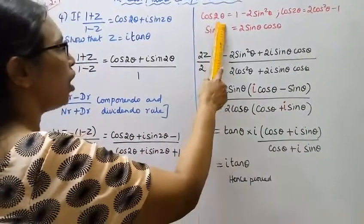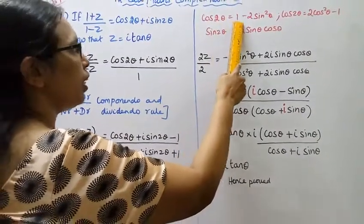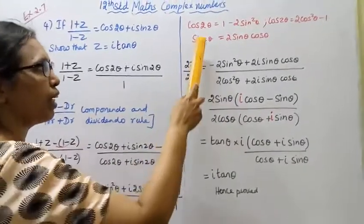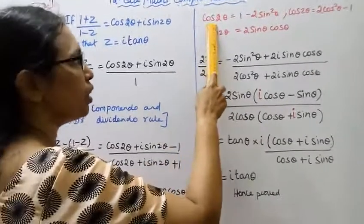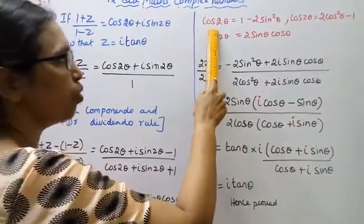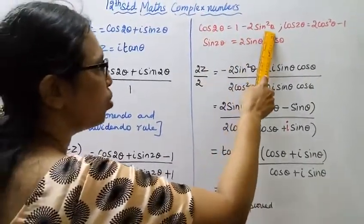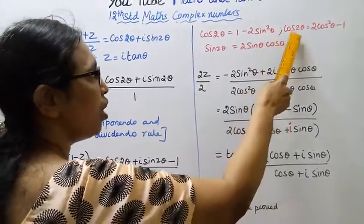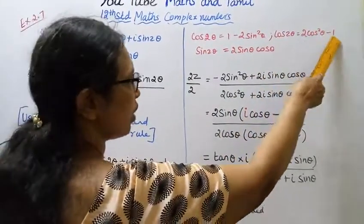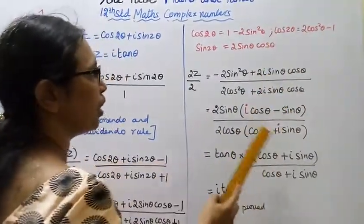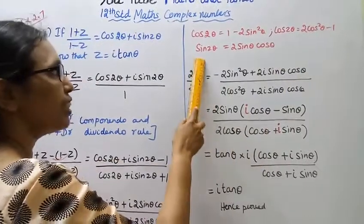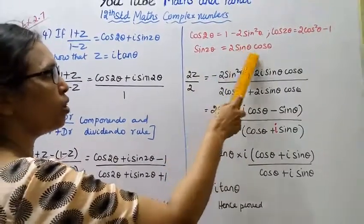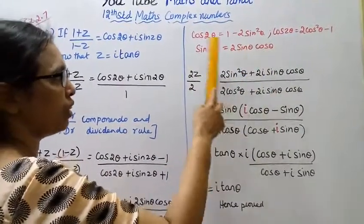Now we use the 11th standard trigonometric identities: cos2θ = 1 − 2sin²θ, and also cos2θ = 2cos²θ − 1. sin2θ = 2sinθ·cosθ.